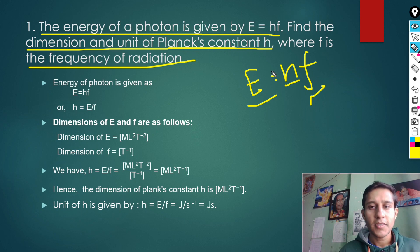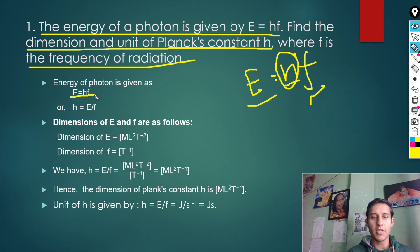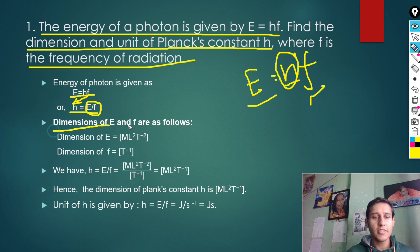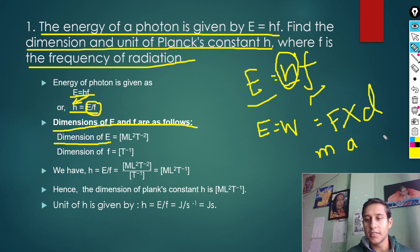We need to find the dimension of h. So first we write the formula, then in the second line we find the value of h: h = E/f, dividing both sides by f. So h is equal to E by f. Now what is the dimension of energy? Energy has dimension ML²T⁻². Energy is work done, which is force into distance, and force is mass into acceleration.